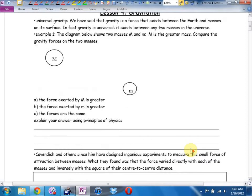Example one. The diagram below shows two masses. Big M, think planet, and little m, think moon or satellite. Big M is the greater mass. Compare the gravity forces on the two masses. Option A, the force exerted by M is greater. Option B, the force exerted by little m is greater. Option C, the forces are the same. And convince me. We're going to vote. How high you hold your hand up is how sure you are of the answer.